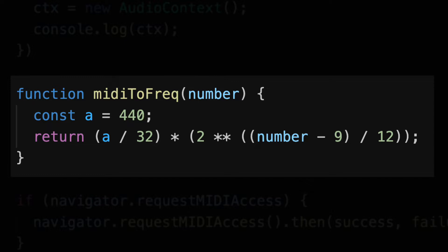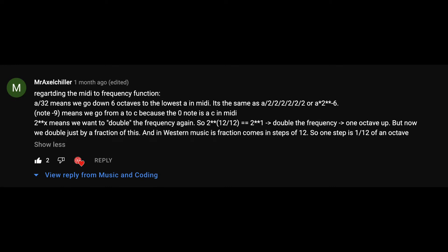In the video, I asked people to leave a comment with an explanation if they had any, and Mr. Axel Tiller actually posted an explanation. Here's what he wrote: A over 32 means we go down 6 octaves to the lowest A in MIDI — the same as A times 2 to the power of minus 6. Then MIDI number minus 9 means we go down from A to C, because the 0th note is a C in MIDI. And then 2 to the power of X means that we want to double the frequency again, and then we get a result.